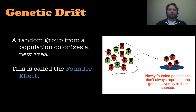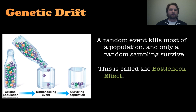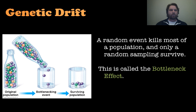The founders of a certain area are not always going to represent the genetic diversity of the original population. Another part of genetic drift is the bottleneck effect — a random event that kills off most of a population, and only a random amount survive. Imagine a bottle full of organisms: you used to have purple, orange, and green beads, but after this random event, only purple and one green survive. That is the bottleneck effect.